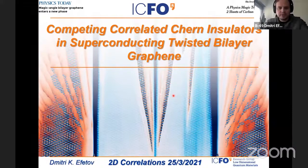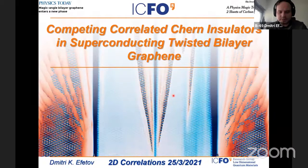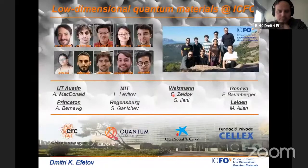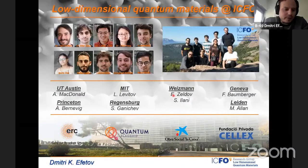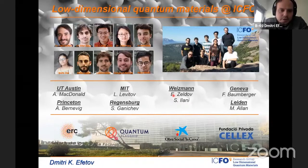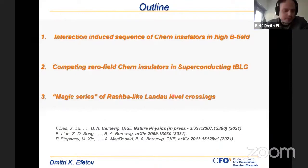Thanks very much, Milrat, for the introduction. I'll be talking about some of the developing stories in Twisted Bilayer Graphene, which is mostly related to its topological and magnetic properties. Before I start, I really just want to thank the people involved in this work. From my group, the work was primarily done by Shaubolu, Tsita Das, and Peter Stepanov, and we're also very grateful for theory collaborations, in particular by Ellen MacDonald and Andrej Bernevik.